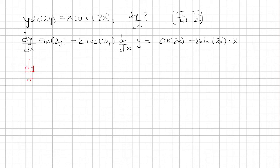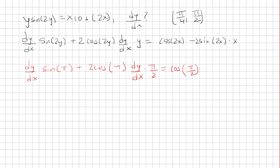So we have dy/dx times sine(2y): y is π/2, so that's sine(π). Then 2·cosine(2y)·dy/dx times y, which is π/2. On the right side, since x is π/4, cosine(2x) is cosine(π/2). Then negative 2 times x, which is π/4, times sine(2x), which is sine(π/2).